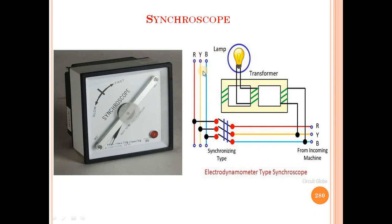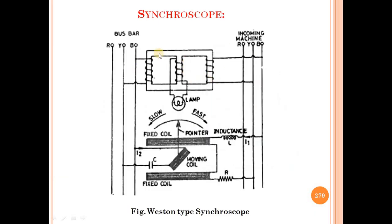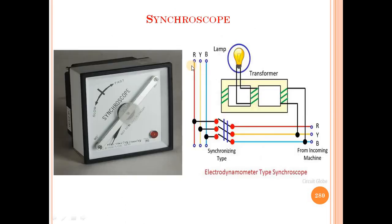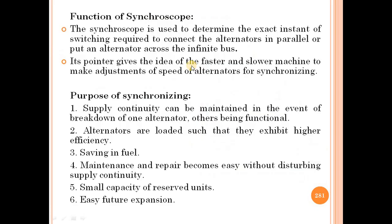This is the bus bar of RYB phases. This is the synchronizing type switch. This is the incoming machine. This is the transformer connected here. This is the central lamp connected here, and this is the transformer and lamp connected here. This diagram is important for the main exam.